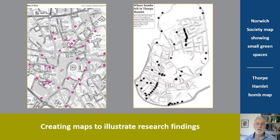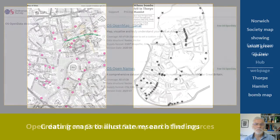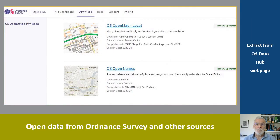Moving on now to the second part of the talk: you've done your research and you might wish to use a map to illustrate the findings. Open data is now available from Ordnance Survey in particular, but also from other sources. You're paying for it as taxpayers, so you might as well use it. It's free to use, but you have to acknowledge the source. So all the maps I'm showing have a base that's Crown Copyright and Database Right 2020.